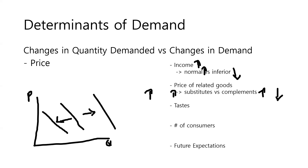The third factor is taste. If people's preferences move toward a certain product, it is likely that the demand will increase. The fourth factor is the number of consumers — if it increases, demand increases; if it decreases, demand decreases. The fifth is future expectations about price. If we expect the price to increase next week, demand right now will increase since it's cheaper now. Conversely, if we expect prices to go down, the demand right now will decrease.